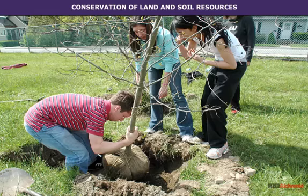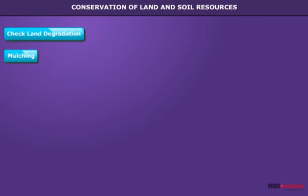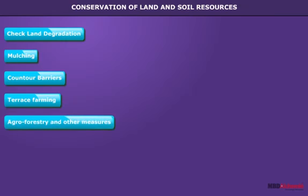Some methods of soil conservation are: checking land degradation, mulching, contour barriers, terrace farming, agroforestry, and other measures such as shelter belts.